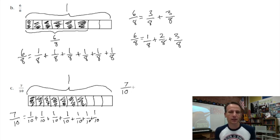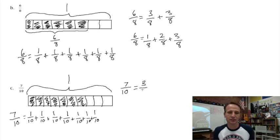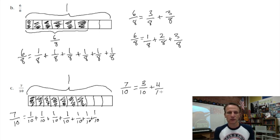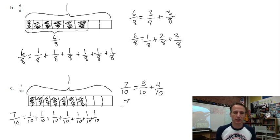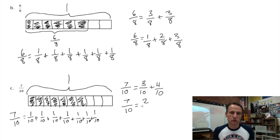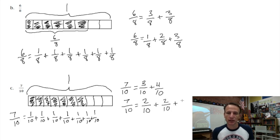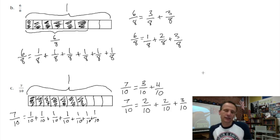Seven tenths another way: three tenths and four tenths. There are other ways too — like five and two, or six and one, or even seven and zero. Let me do one with three add-ins: two tenths plus two tenths plus three tenths equals seven tenths.